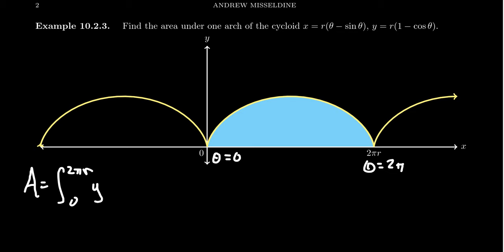And so that's the parameterization we're working with. So area is going to equal the integral from 0 to 2 pi r of y dx. But as we parameterize this, we're going to go from theta equals 0 to theta equals 2 pi. y is then given by the function above. We're going to get r times 1 minus cosine theta. And then for dx, we have to take the derivative of the x function, which case we're going to get r times 1 minus cosine theta, d theta.